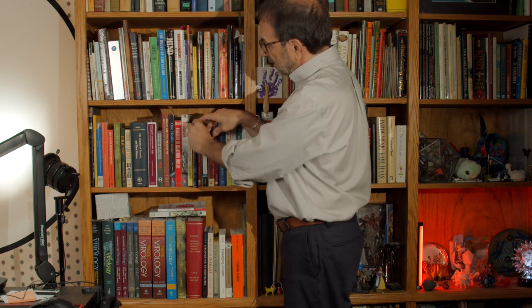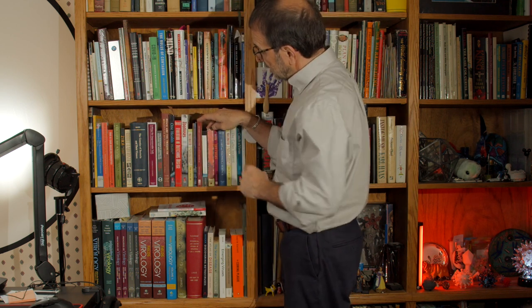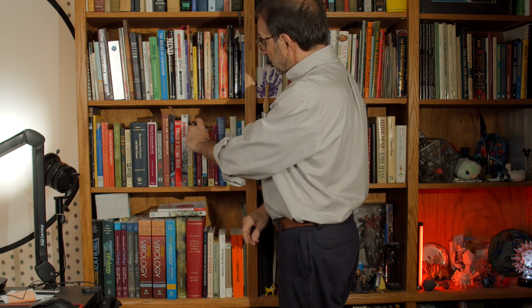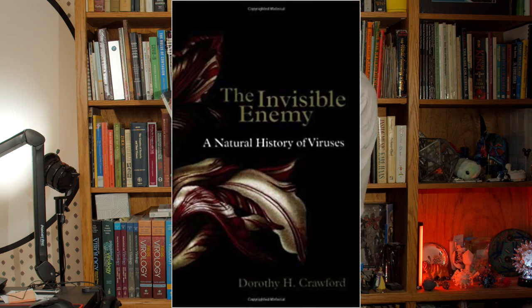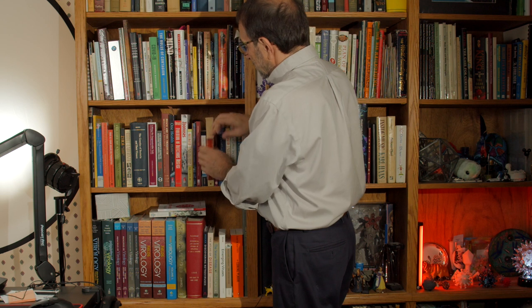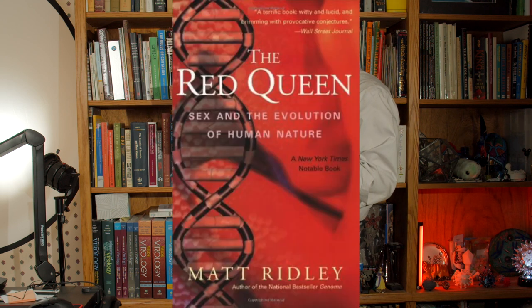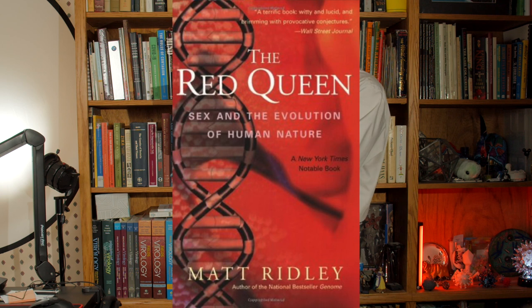Next we have Carl Zimmer's book, A Planet of Viruses, Microbes and Evolution from ASM Press. Here's a good one, The Invisible Enemy, A Natural History of Viruses by Dorothy Crawford. This was given to me. This one's not quite a virology book, but it's great. The Red Queen, Sex and the Evolution of Human Nature by Matt Ridley. It's great. It's all about the Red Queen. And around here, we do all the running and don't seem to get anywhere. I bought this one myself.